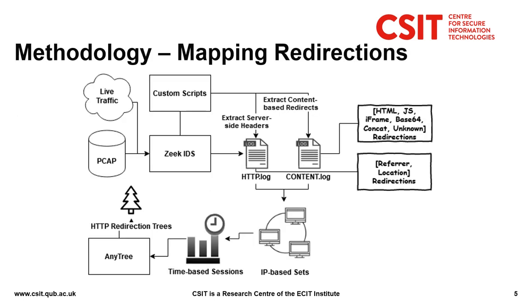So how do we map the HTTP redirections from the network traffic? For that we use the Zeek intrusion detection system, formerly known as Bro. Zeek can process live network traffic or packet captures, and if you give Zeek a pcap it will generate a series of logs, one of which is the HTTP log. The HTTP log contains a list of all the HTTP entries — all the request-response pairs — from the packet capture or from the network traffic. We can use a small custom script to ensure that all server-side HTTP headers are also added to this log. This allows us to map all HTTP header-based redirections, so any redirections that occur through the referrer header or the location header can be easily mapped using the HTTP log.